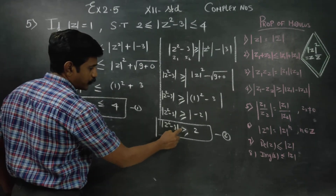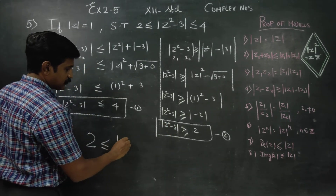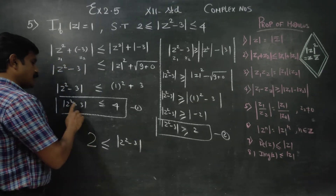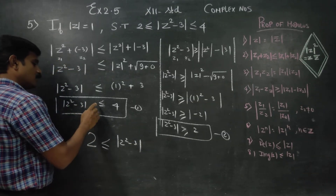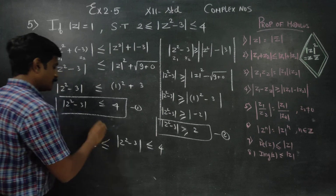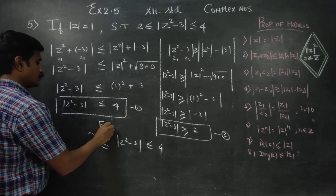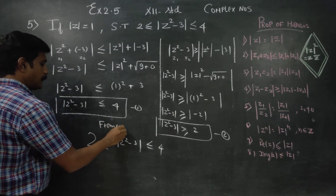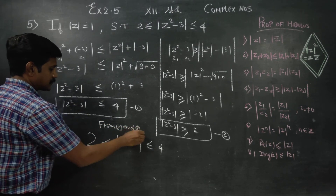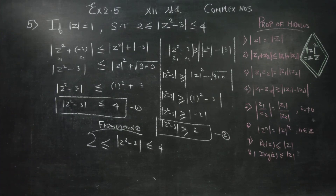From result 1 and result 2, we get the final result: 2 is less than or equal to |z² - 3| less than or equal to 4. Thank you.